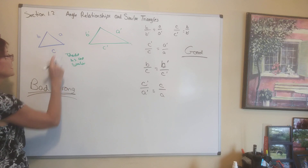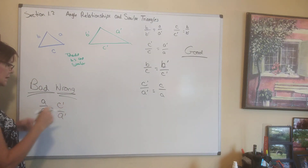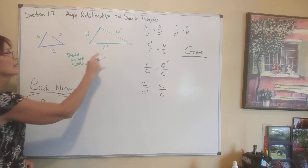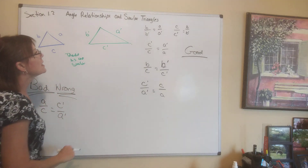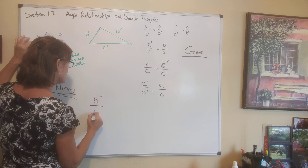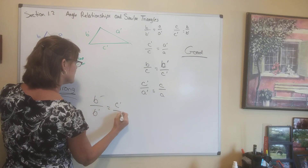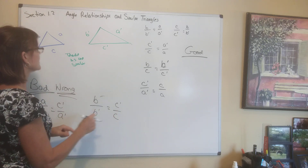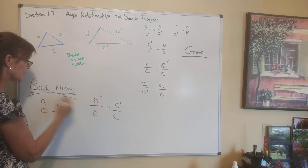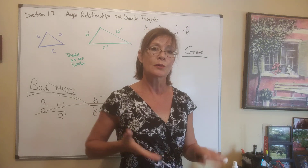I cannot say A is to C as C prime is to A prime. I used the same sides, but didn't write them in the right order — I should have said as A prime is to C prime. Also, you can't say B is to B prime as C prime is to C — I used the right things, but not in the right order. If I go from one triangle to the other, I have to stay consistent and not switch back.